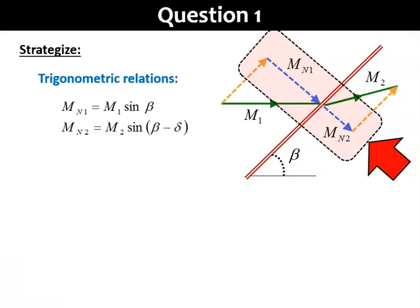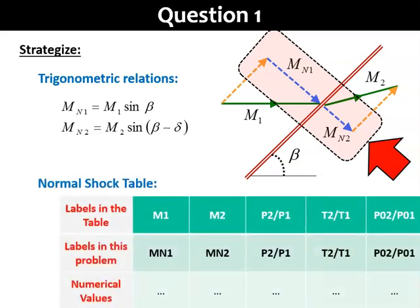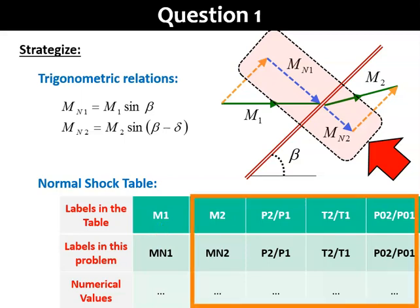Once we have Mn1, we can treat the problem as a normal shock problem. And the easiest way is to use the normal shock table to get the parameters across the shock by taking the Mn1 value that we just calculated to be the M1 value in the table. The other parameters in the normal shock table are paired with the actual parameters in the problem, as shown here in the box.